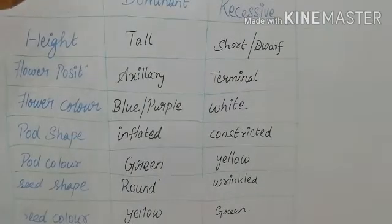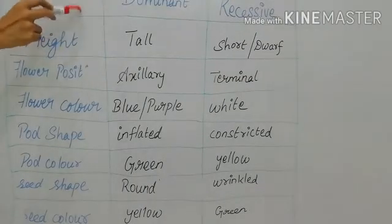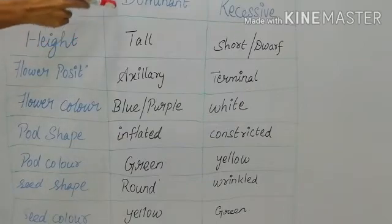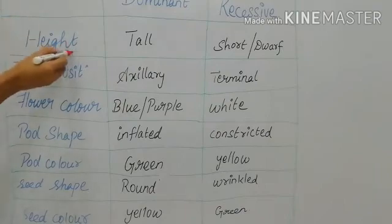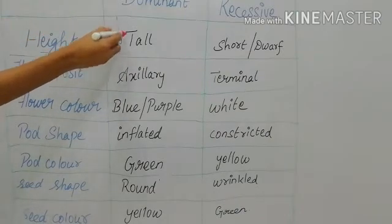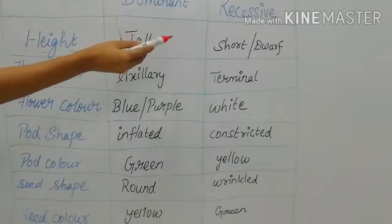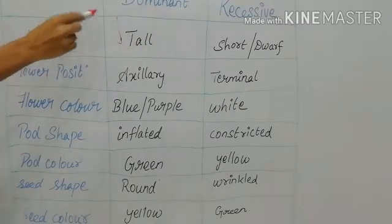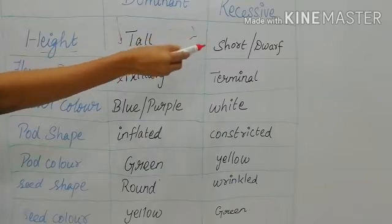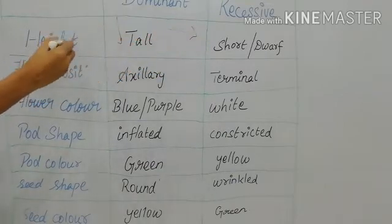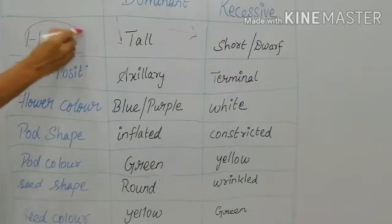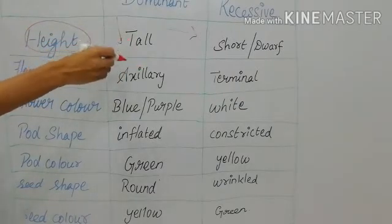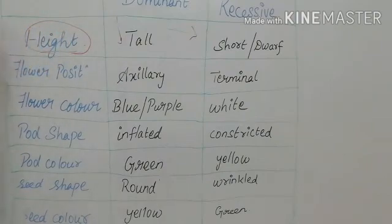If the cross takes place involving only one character — that character paired as dominant with recessive — it is called a monohybrid cross. For height, dominant is tall and recessive is short or dwarf. When tall was crossed with short, that is known as the monohybrid cross because only one character, height, is involved. That is why it is known as monohybrid cross.